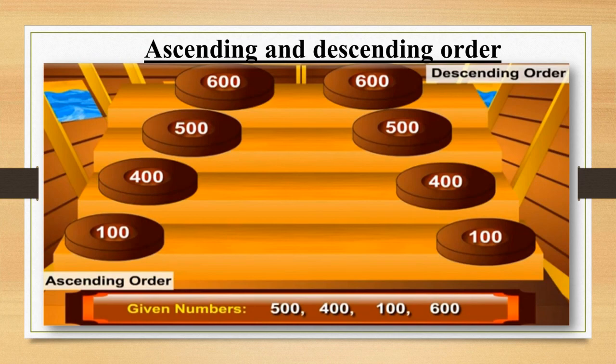Now the next example: 500, 400, 100 and 600. The ascending order would be 100, 400, 500 and 600. And what about the descending order? The descending order would be 600, 500, 400 and 100.